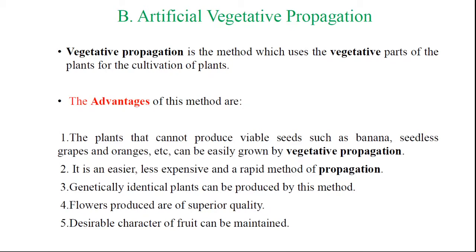First we will consider what are the advantages of the artificial methods of vegetative plant propagation. The first one: a plant that cannot produce viable seeds, such as banana, seedless grapes, and orange, can be easily grown by vegetative methods of plant propagation. That is one of the merits — the plants which can't produce seeds, and if no seed, no sexual propagation. Such types of plants are propagated only by vegetative propagation.